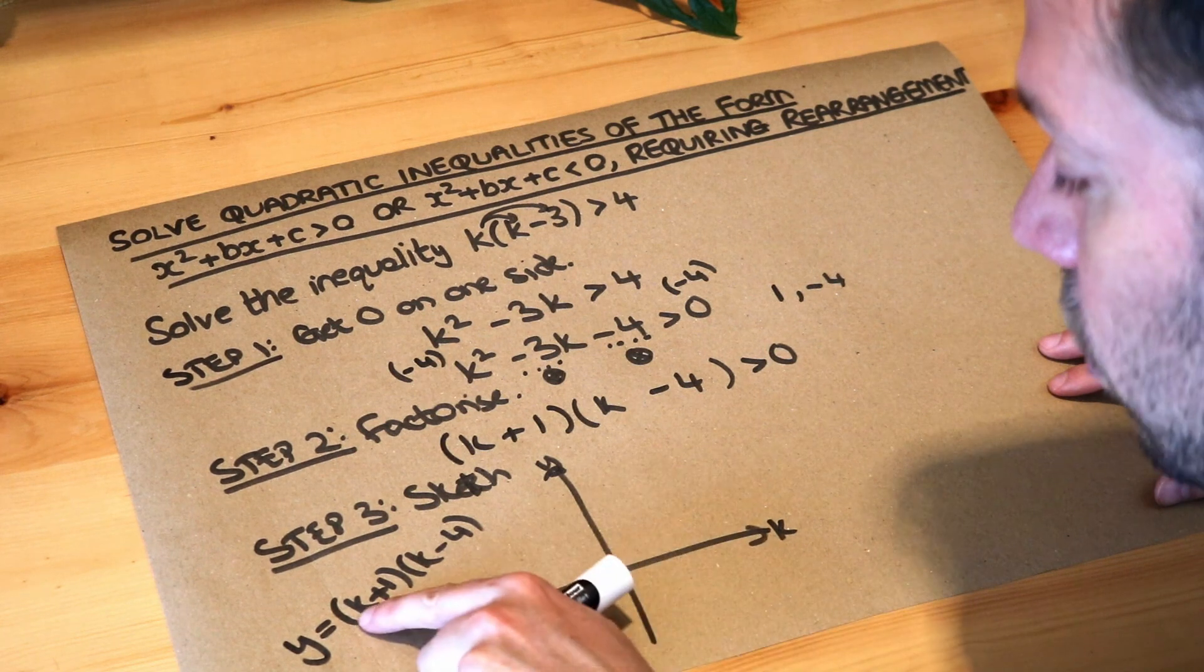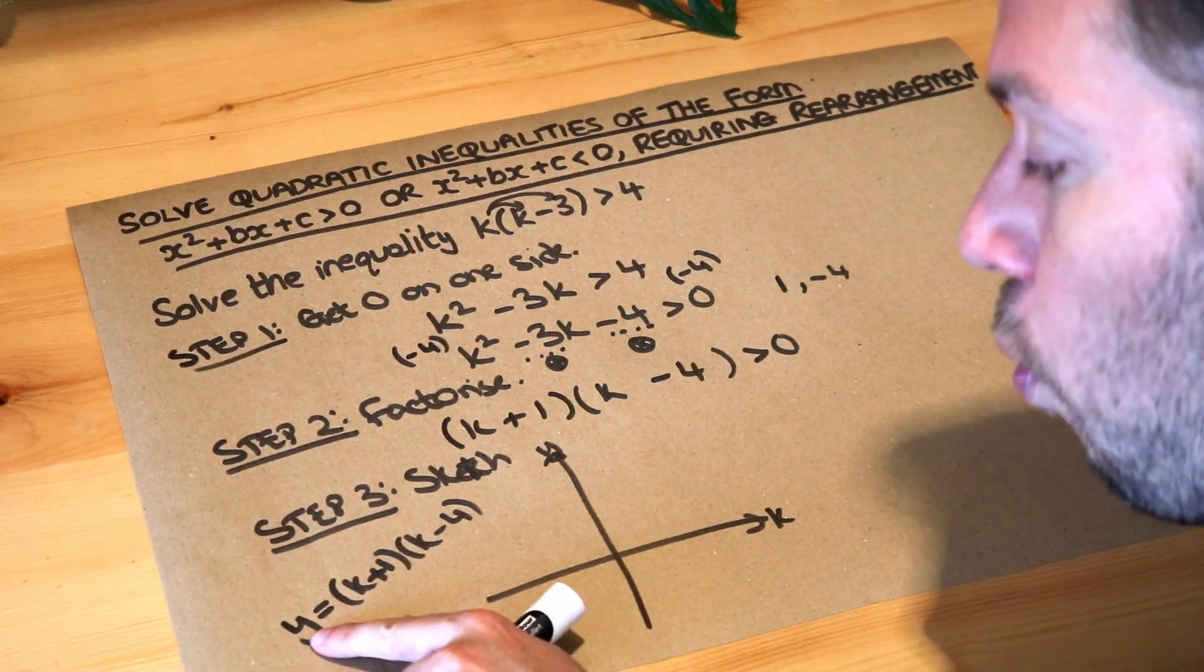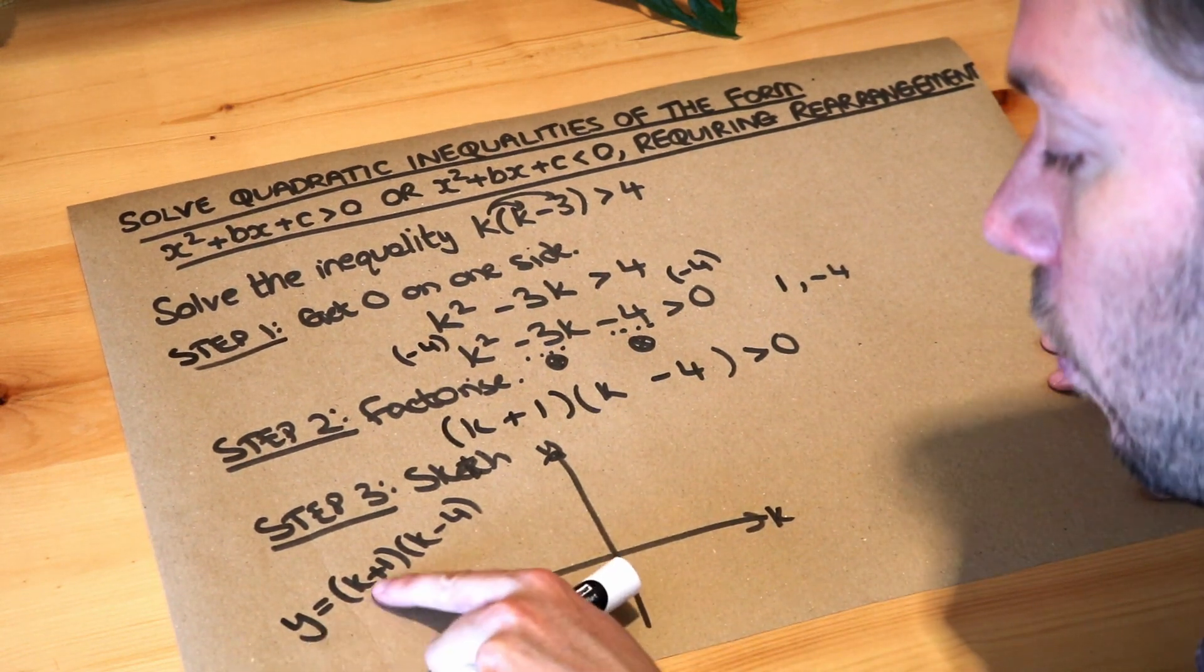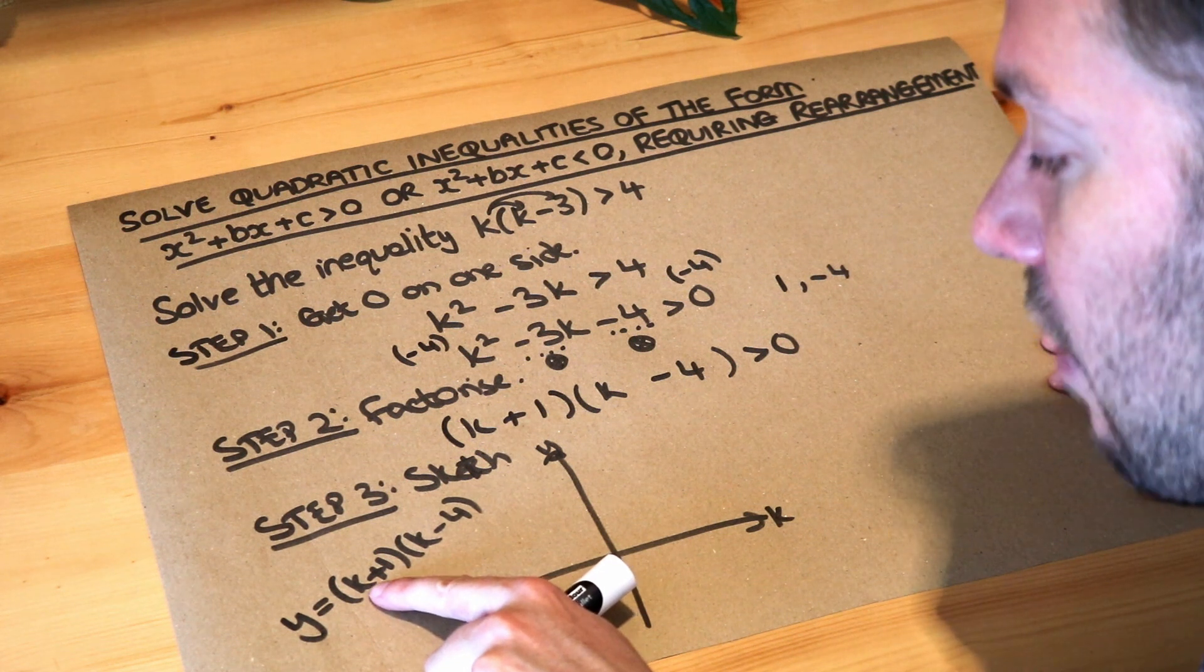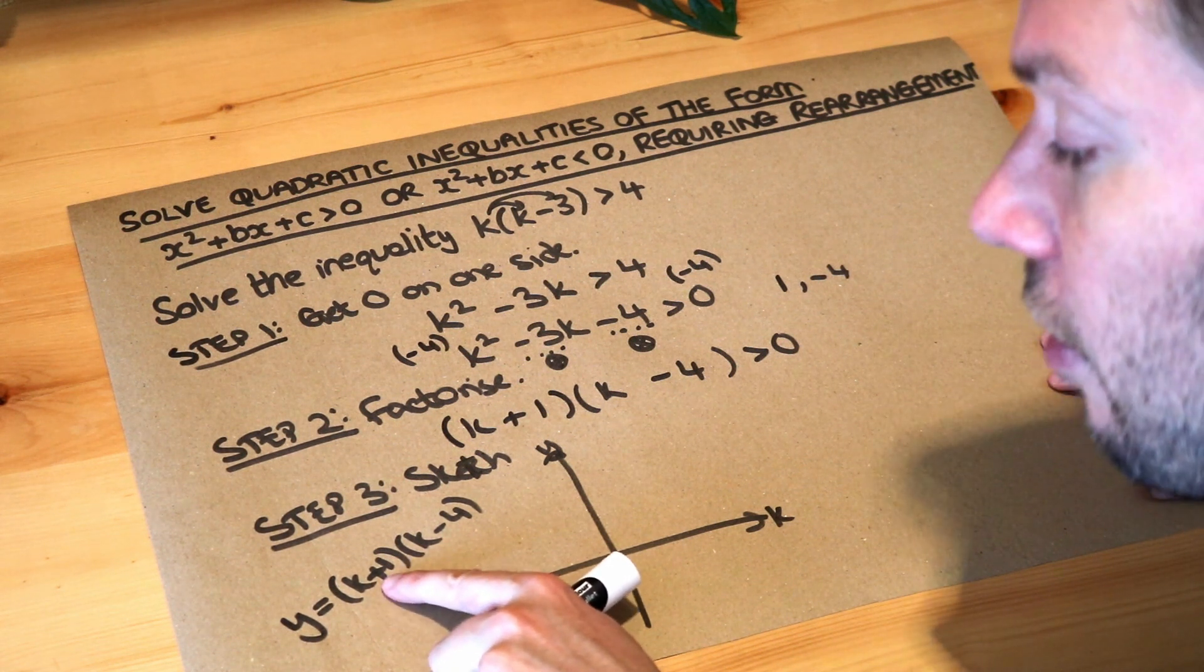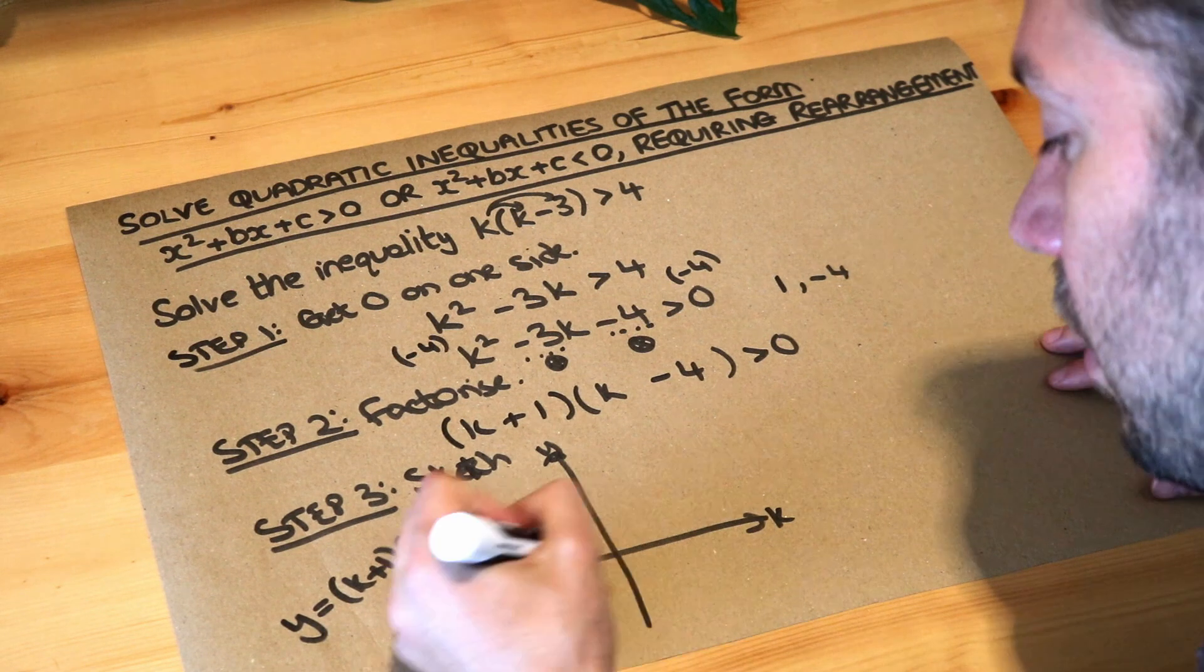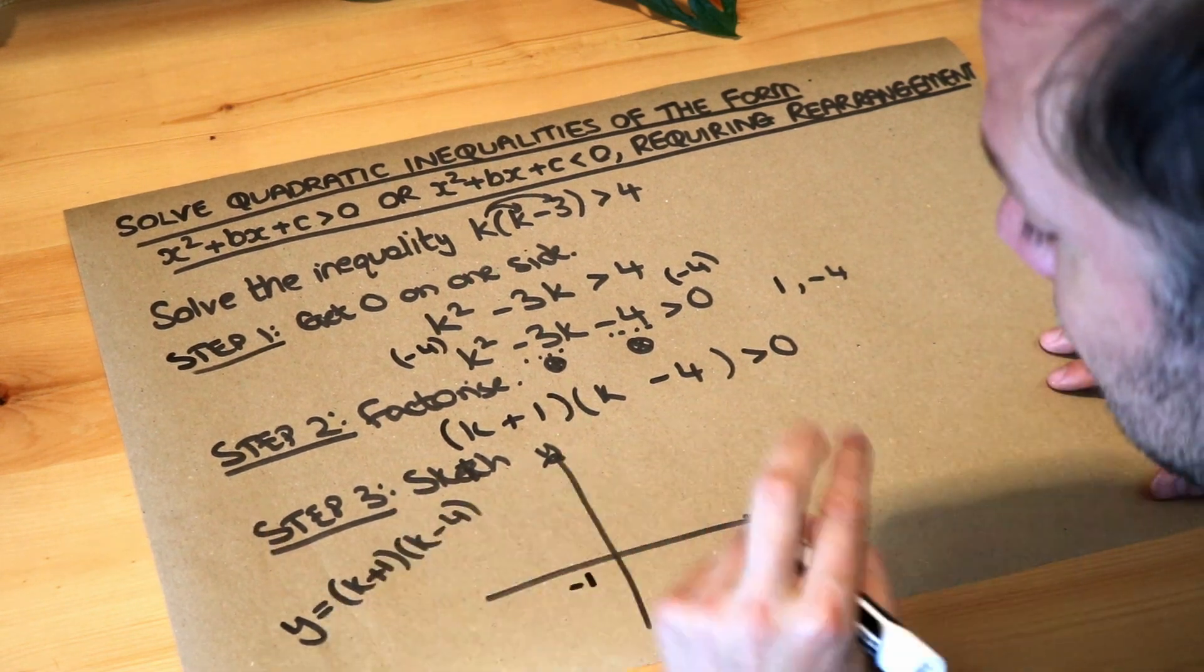What values of k would make y zero? What would make y zero here? Well if k was minus one, you'd have minus one plus one, that would give you zero, and zero times anything would be zero. So we get a root of minus one.